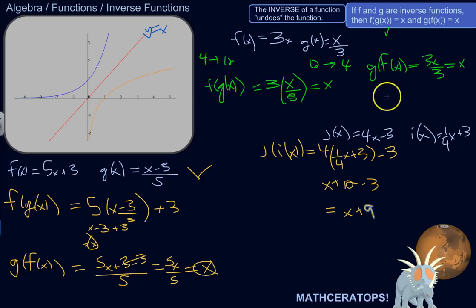So we can stop there and say j and i are not inverse. If it fails one of these tests, it fails all of them. Well, you know, it might pass one, but if it fails one, you can just stop and say they are not inverses. So these are not inverses. They look like they could be, but they're not. And you use this algebraic test to see.